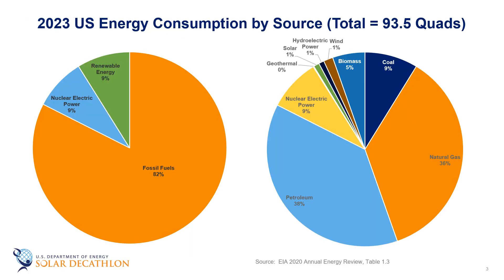In other episodes, we've talked about how much energy the United States uses. Remember, this is typically measured in quads, which is a quadrillion, or 10 to the 15 BTUs. When we look at where that energy comes from, we can see on a pie chart that it is dominated by fossil fuels. Petroleum, natural gas, and coal make up a significant portion of this mix of energy sources.